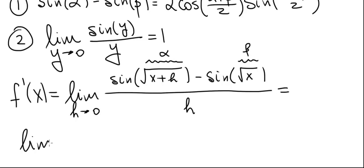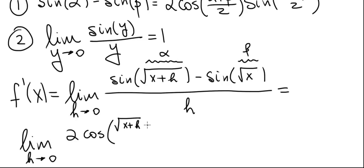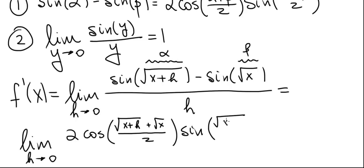This becomes the limit as h goes to zero of twice cosine of (√(x+h) + √x)/2, times sine of (√(x+h) − √x)/2, all divided by h.